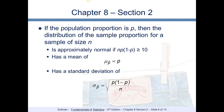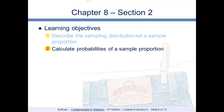If the population proportion is p, then the distribution of the sample proportion for a sample of size n is approximately normal if n times p times (1 minus p) is greater than or equal to 10. The mean of p-hat, mu of p-hat, is approximately equal to the population proportion p. The standard deviation of p-hat is the square root of p times (1 minus p) divided by n. Our learning objectives are to describe the sampling distribution and calculate probabilities for a sample proportion.